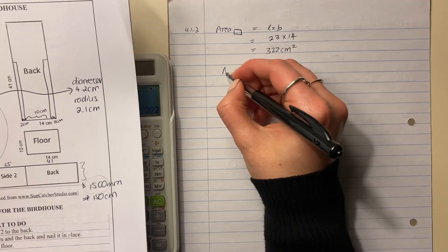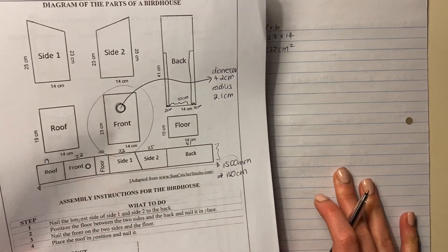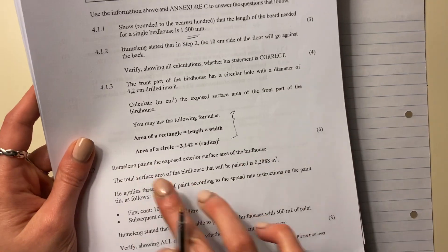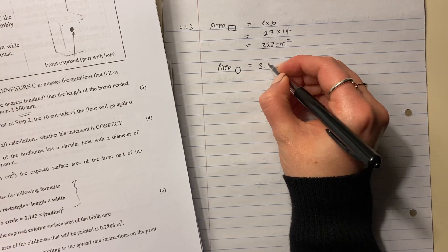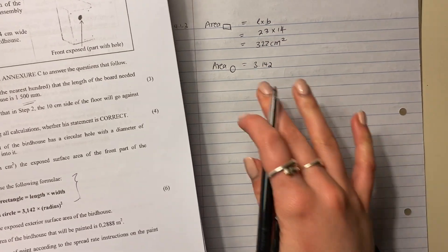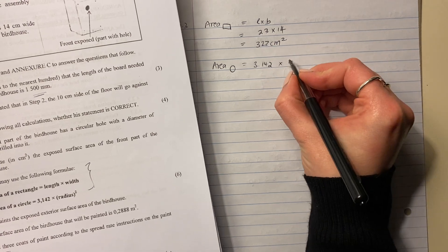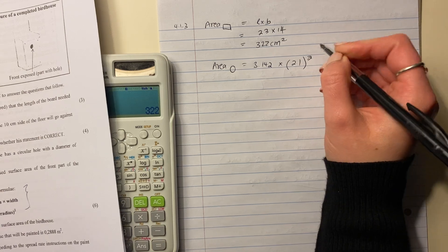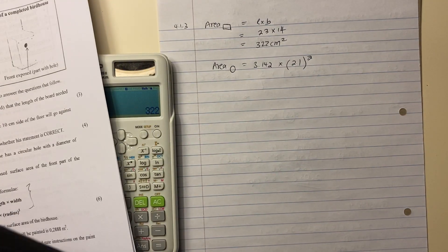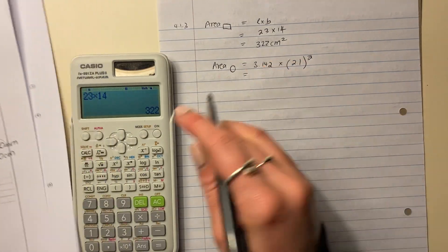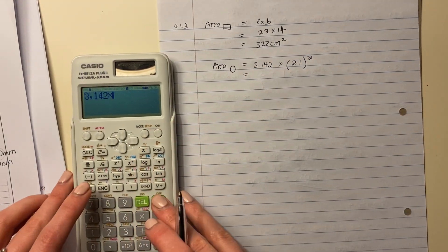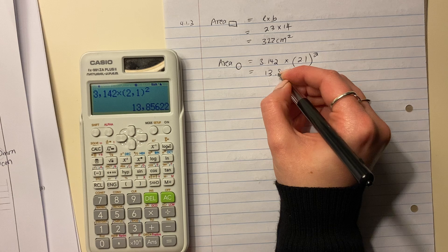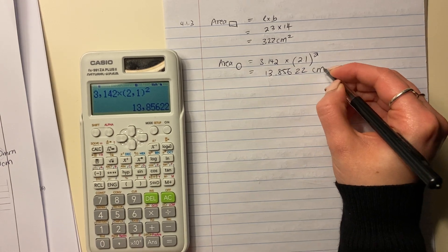Now, we need to get the area of that little hole, right, for the birds to come in and out. So what is the area of a circle? Well, they've given it to us over here. So we say 3.142. Be careful to use the value of pi if it's given. Don't use the symbol. The radius, we talked about this already, is 2.1. And it is squared. Why is it 2.1? Well, I showed you over there. So 3.142 times by 2.1 all squared. And that is 13.85622 centimeters squared.